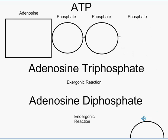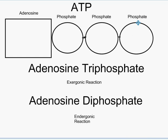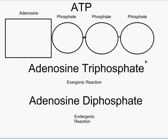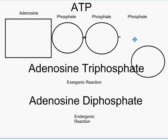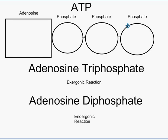Now if we were to take this phosphate group and rejoin it to the ADP, we would then have ATP, and that would be called an endergonic reaction. The reason is because the stored energy is actually going into the new, bigger molecule.